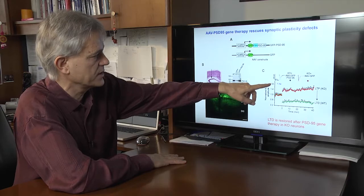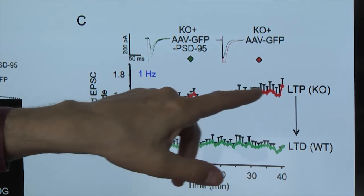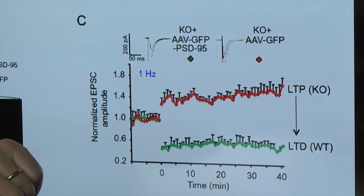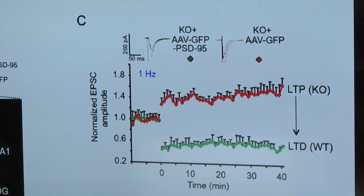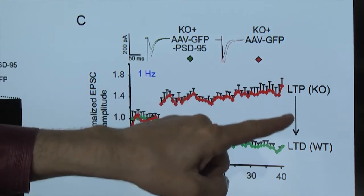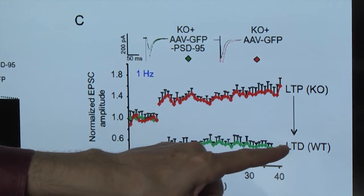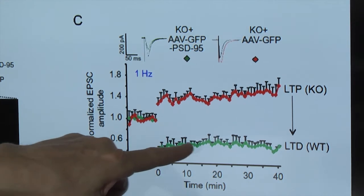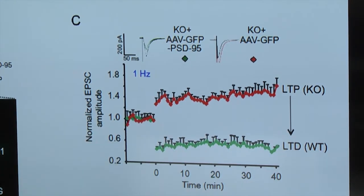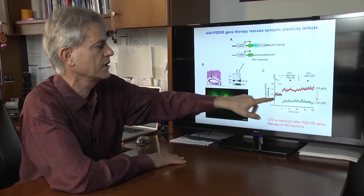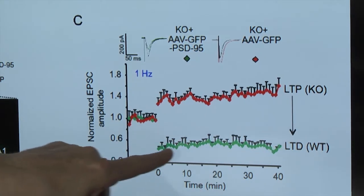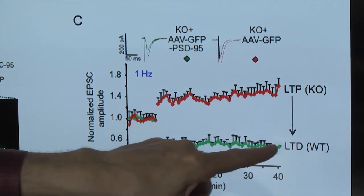As you can see here, in the knockout mice we have an abnormal LTP under low frequency stimulation. In the neurons that have been transduced with PSD95, we can restore a normal LTD. Simply putting back PSD95 in the knockout mice neurons was able to fix the abnormal electrical signals in these neurons.